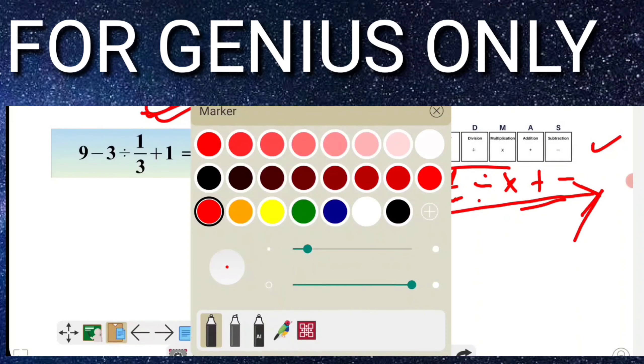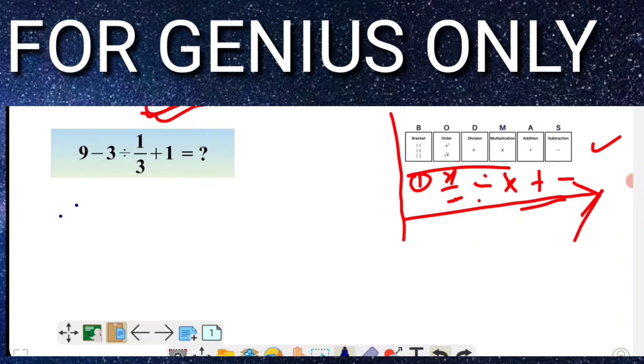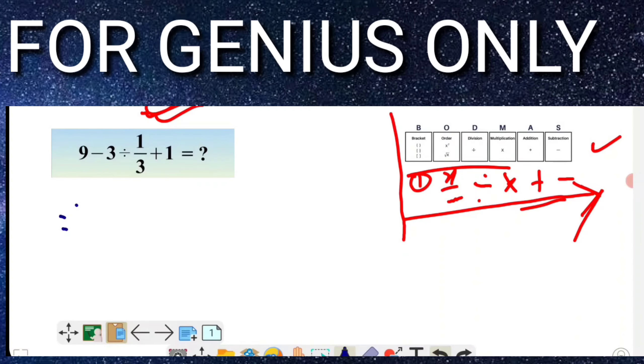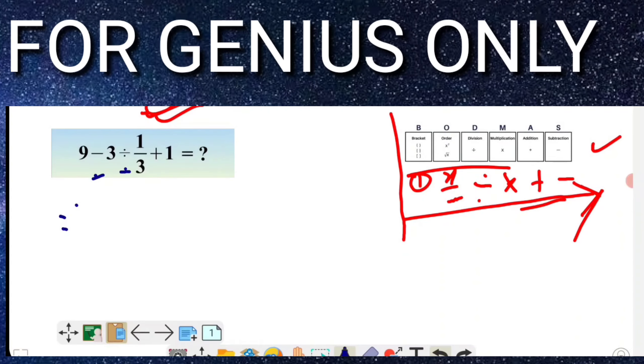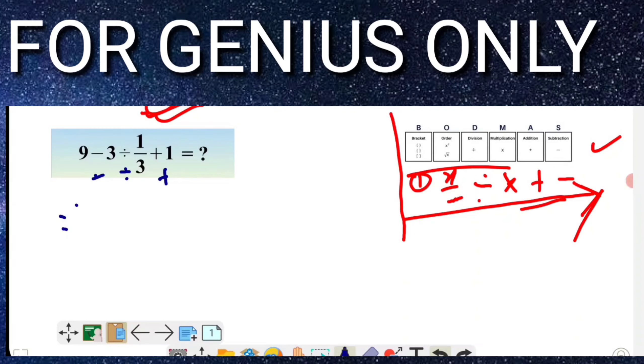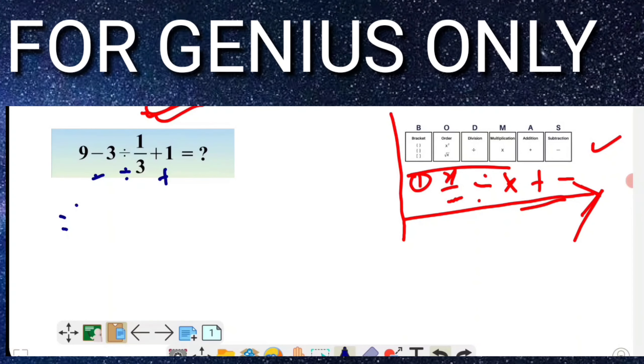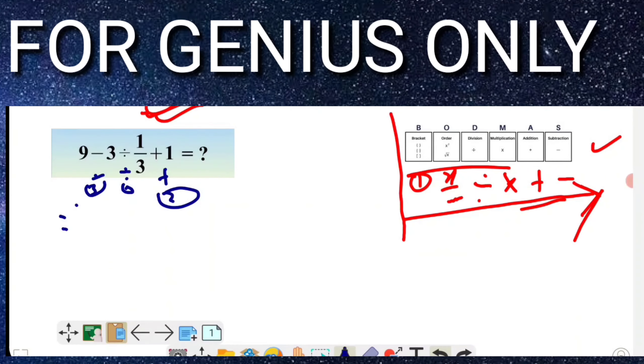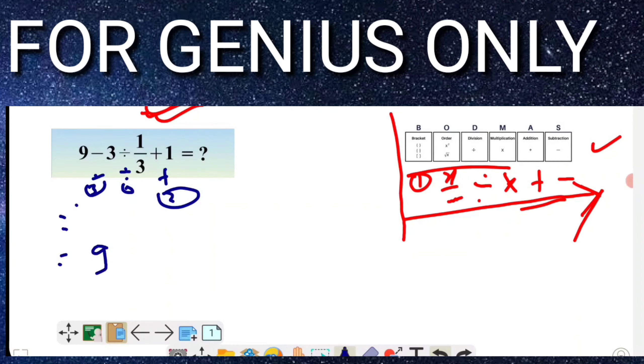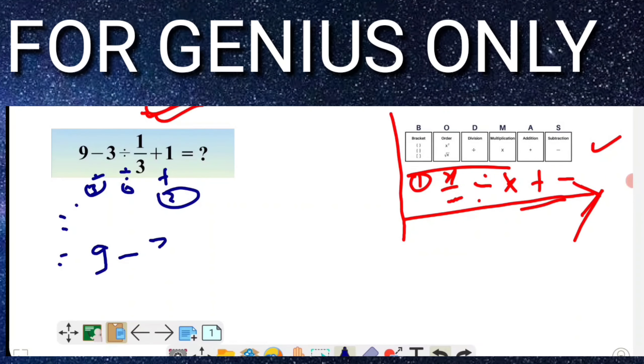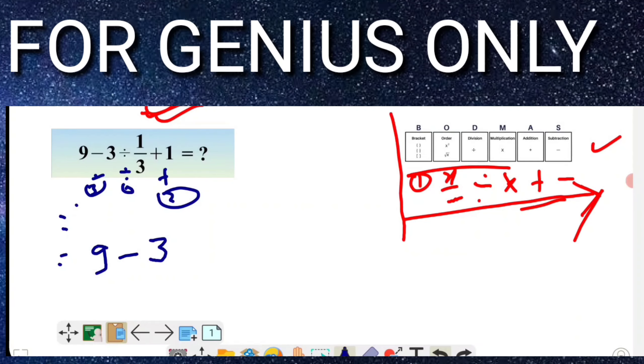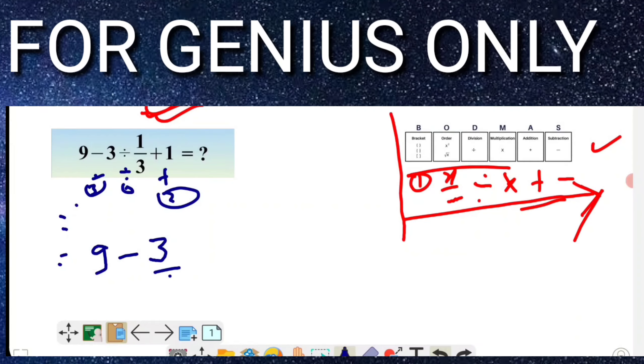Now I'm going to explain. Watch here seriously and find out. In this situation, there are three signs available: first is subtraction, second is division, and third is addition. We will calculate first division, then addition, then subtraction. So now: 9 - 3 divided by... I will divide this one, which means 1 by 3.